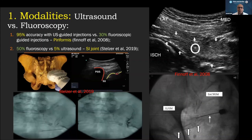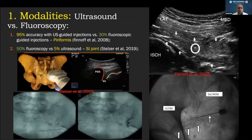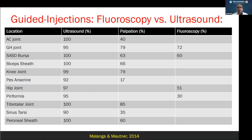Since many of us are doing ultrasound, I want to remind you that the accuracy depends upon your skill level. For SI joints, accuracy is only about 5% with ultrasound unless you're in the advanced stage. For beginners who want to image those structures, fluoroscopy has an advantage. I'd like to show the different areas where you can use these modalities and which one is better for each particular area.